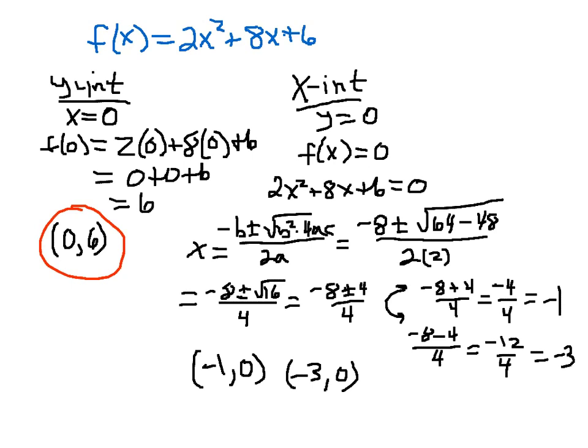To find the x-intercepts, we set our function or we substitute y equal to 0. Now that's how we did it when we were working with linear functions and linear equations. We just substituted y and 0. But now that we're talking about quadratic functions, we just need to set our equation, our output, which is f of x, we set equal to 0.